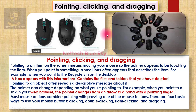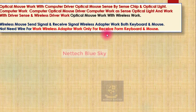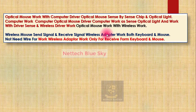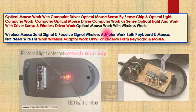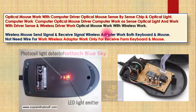Most mouse actions combine pointing with pressing one of the mouse buttons. There are four basic ways to use the mouse buttons: clicking, double-clicking, right-clicking, and dragging. Clicking and double-clicking were already available; right-clicking was the second type. With optical mouse new technology, dragging was introduced. The dragging system is already defined in the operating system program and mouse driver systems. The optical mouse works with computer drivers, sense chips, and optical lights.